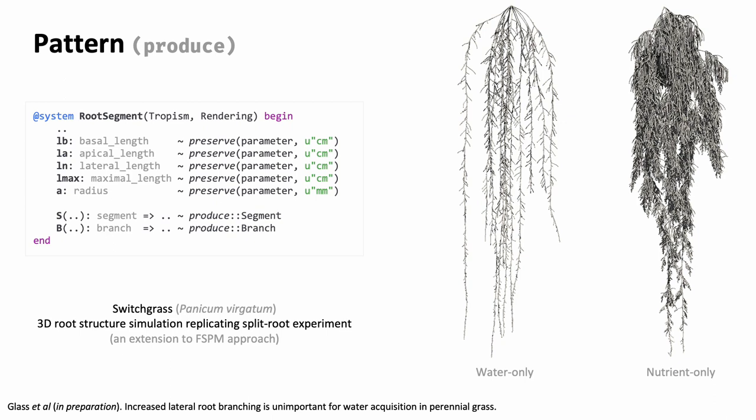While the primary focus of CropBox framework lies on conventional crop models assuming a rather static structure of the plant, it doesn't prevent an extension to a new modeling approach, like dynamic generation of plant structure in details. This example shows two slightly different root architectures rendered in 3D space, where each tiny root segment is generated by produce variables.